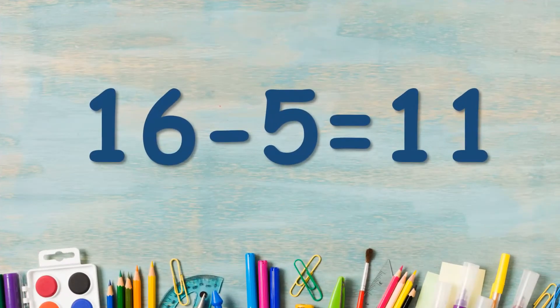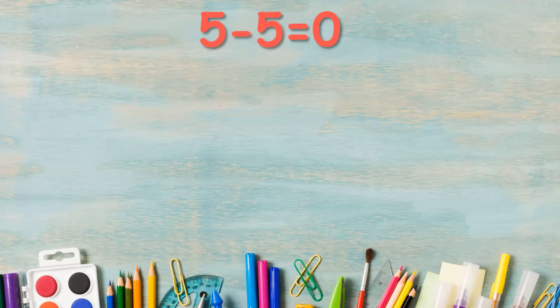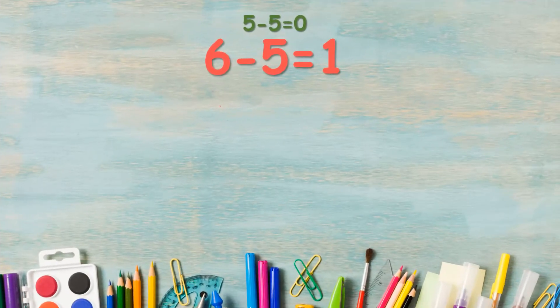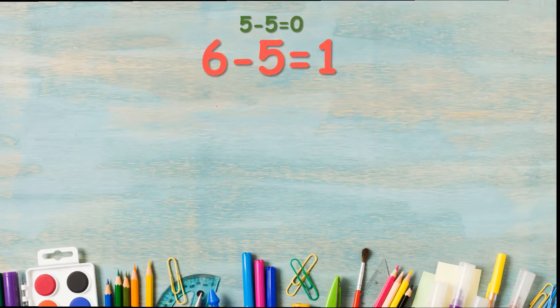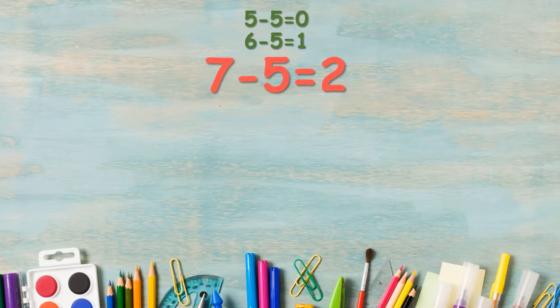16 minus 5 is equal to 11. Now let us repeat. 5 minus 5 is equal to 0. 6 minus 5 is equal to 1. 7 minus 5 is equal to 2.